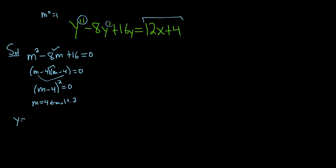The solution is going to have the form c1 e to the mx, so here it's e to the 4x, plus c2 x e to the 4x. That's because of the repetition.